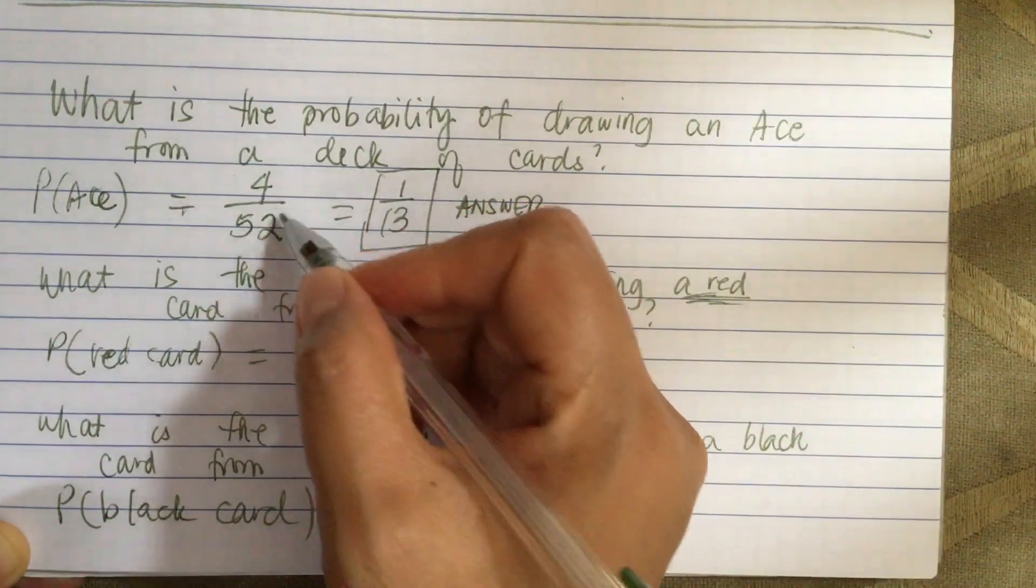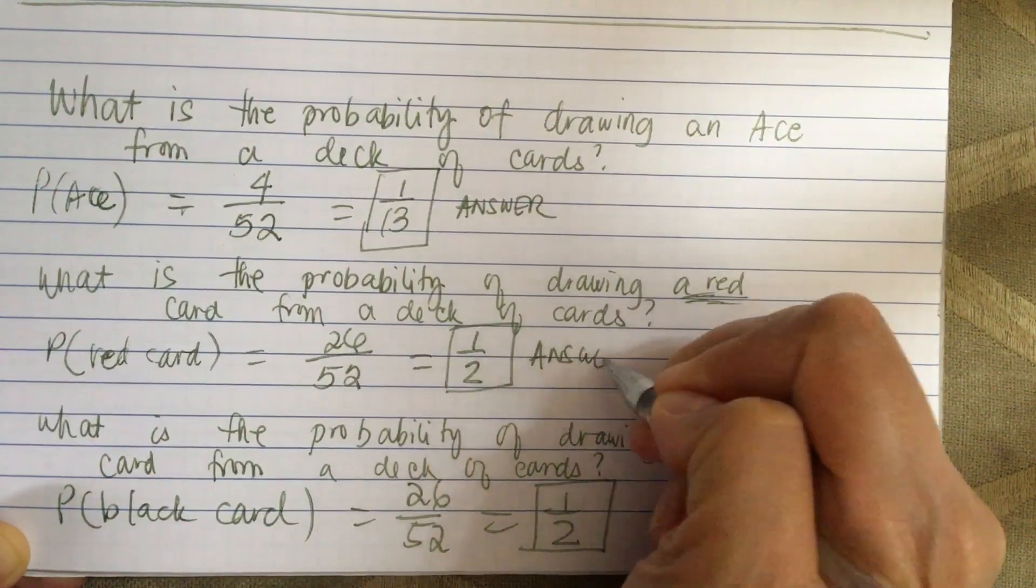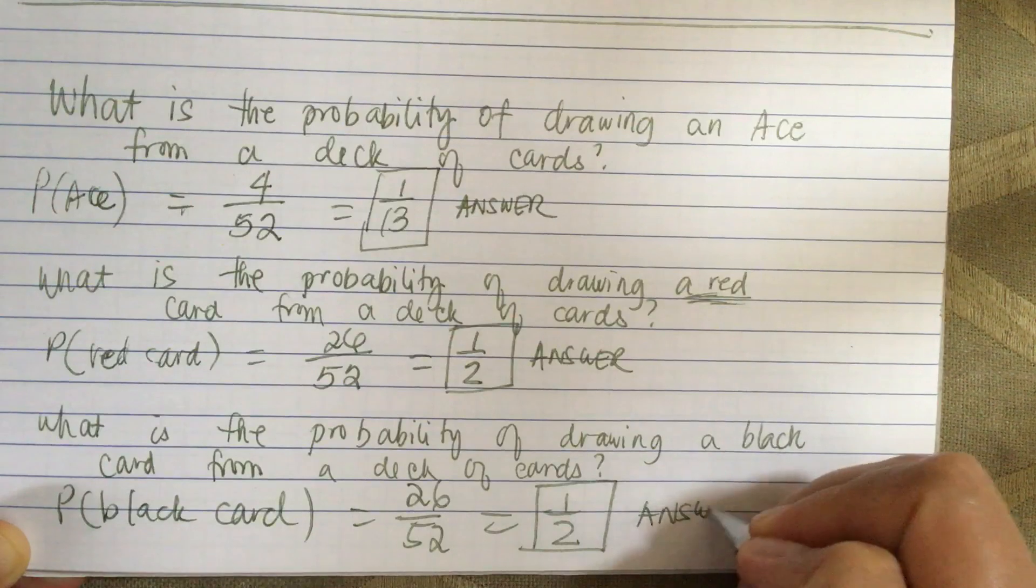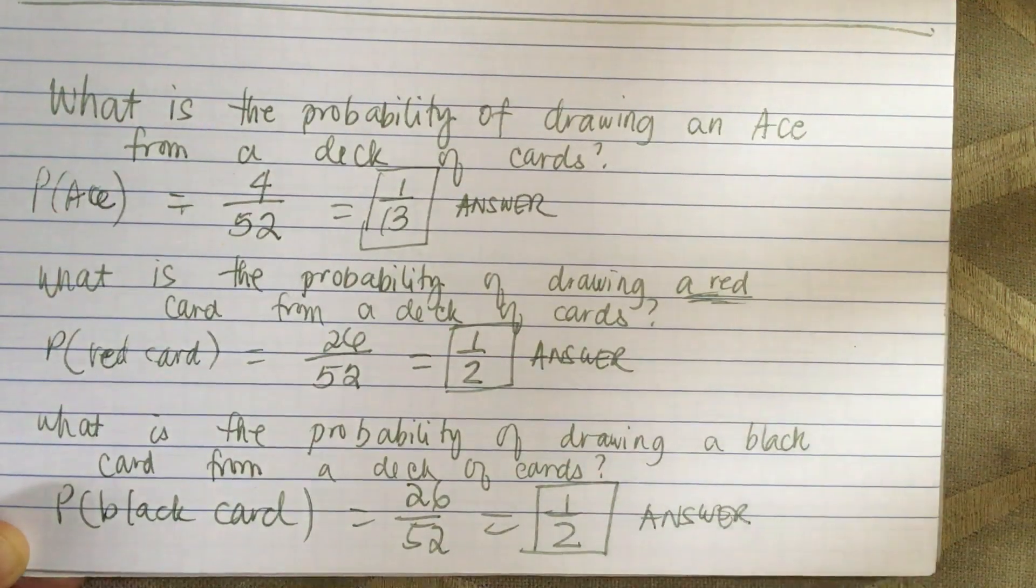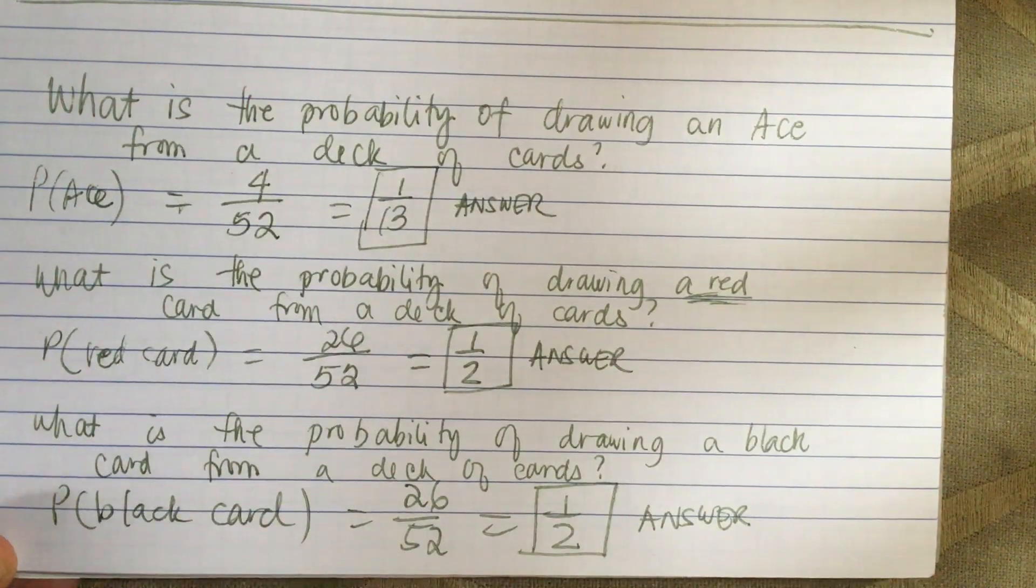We always have to reduce to lowest terms - it's required when you deal with fractions. Otherwise, you don't get full credit if you don't reduce to lowest terms.